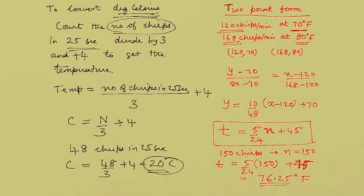If you are able to count 150 chirps in a minute, then substituting 150, we get t is equal to 5 by 24 into 150 plus 45, and that turns out to be 76.25 degrees Fahrenheit.